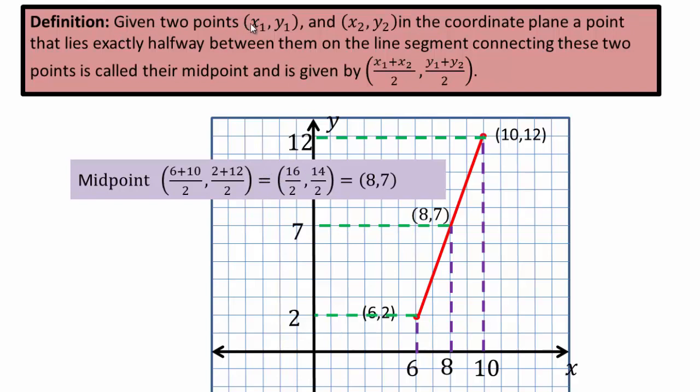So in general, if you're given 2 points, x1, y1, this is my first point, x2, y2, second point, to find a point that lies exactly halfway between them on the line segment connecting them would be given by this. Take the 2 x-coordinates, their average, take the 2 y-coordinates, their average.